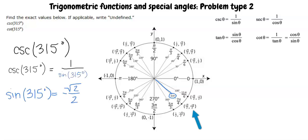Therefore, sine of 315 degrees equals negative square root 2 over 2. Substituting this value for sine theta, we get 1 over negative square root 2 over 2.